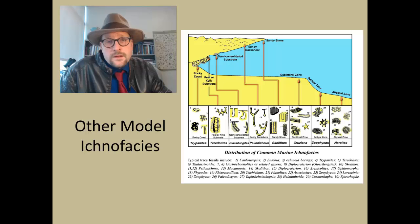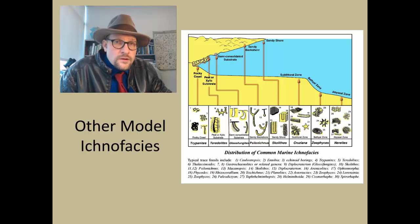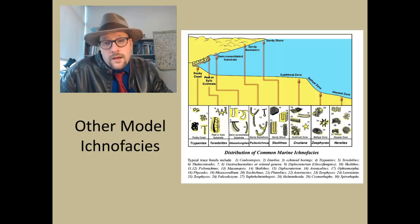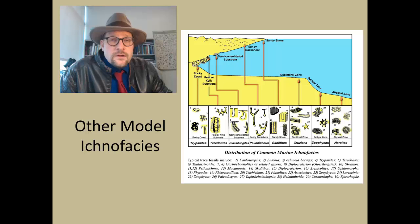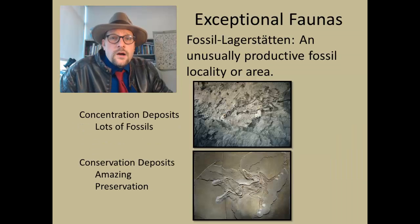Trace fossils are often given a scientific genus name — these are form names that are used, and most ichnologists use many of these terminologies to communicate the types of trace fossils they find. They are not necessarily associated with the organisms that make them — in fact, a number of different organisms may make the same types of trace fossils that you observe.